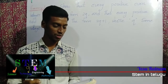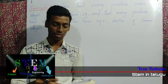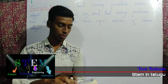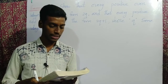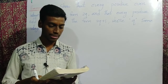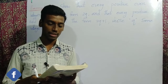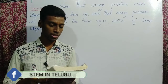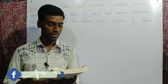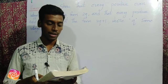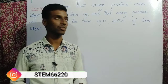Welcome students. Today, Example 1, page number 5. Example 1: Show that every positive even integer is of the form 2q, and that every positive odd integer is of the form 2q plus 1, where q is some integer.